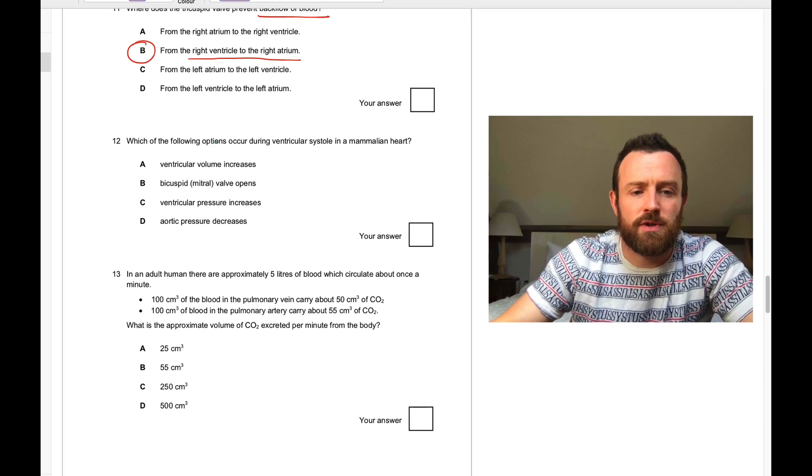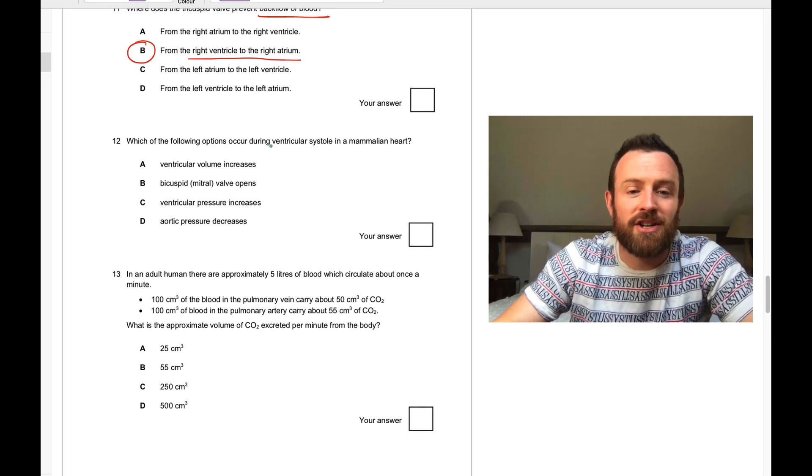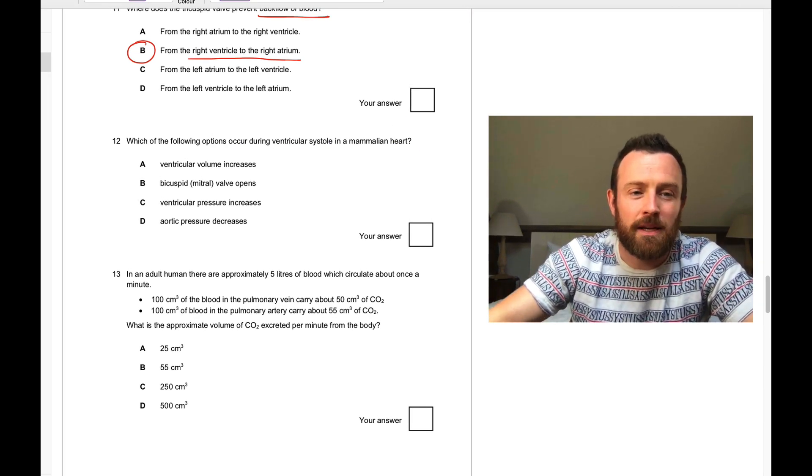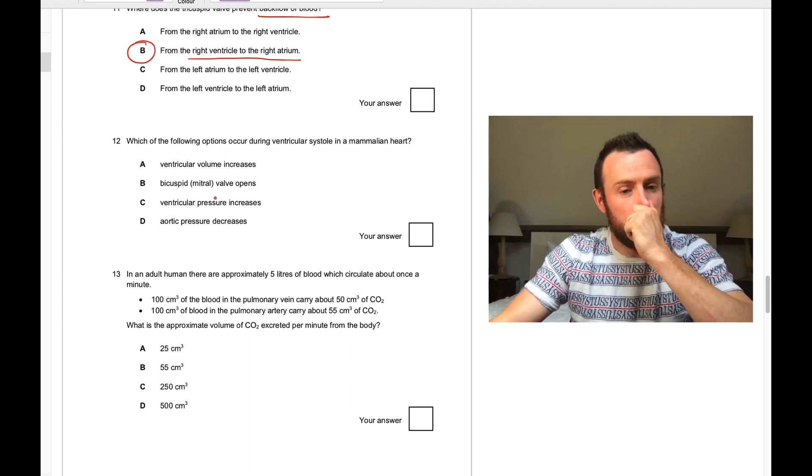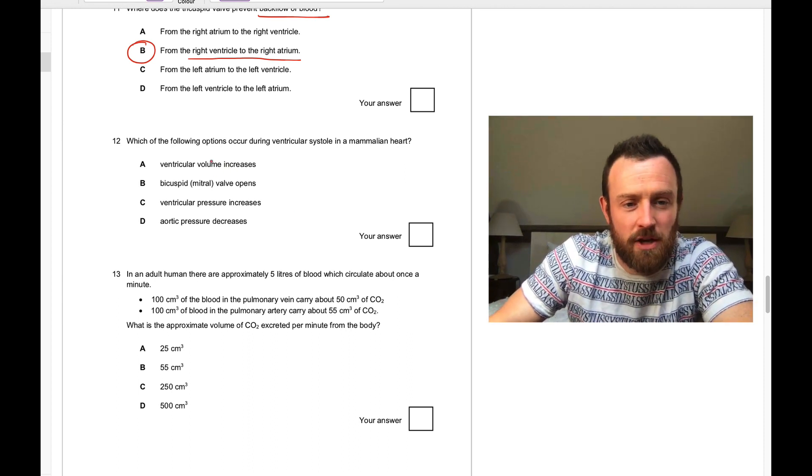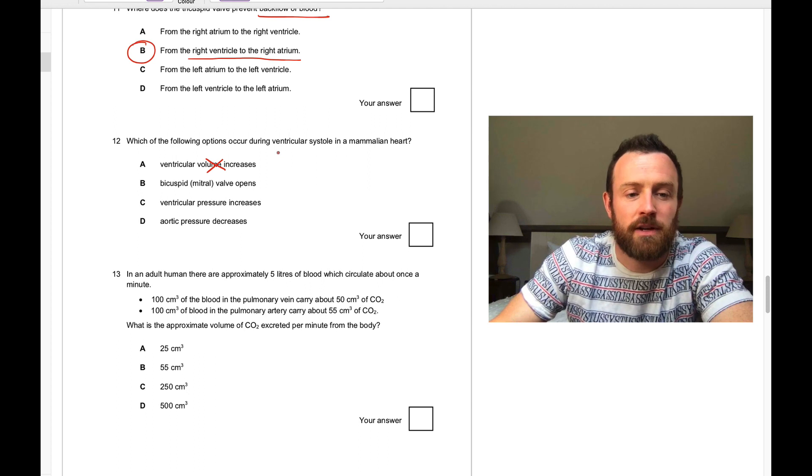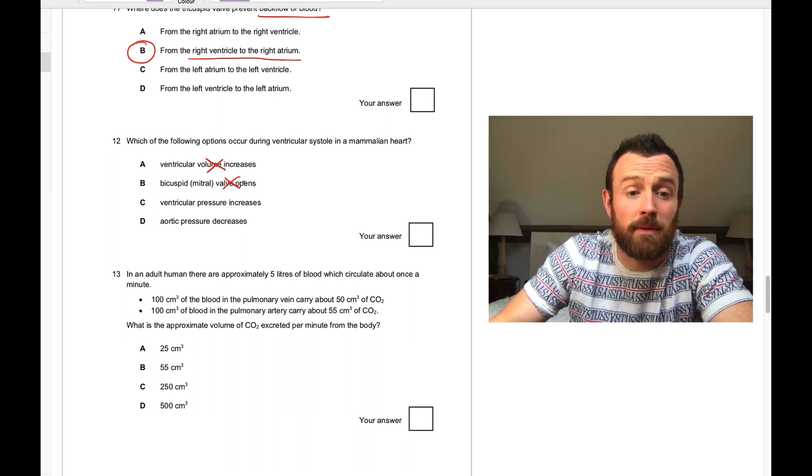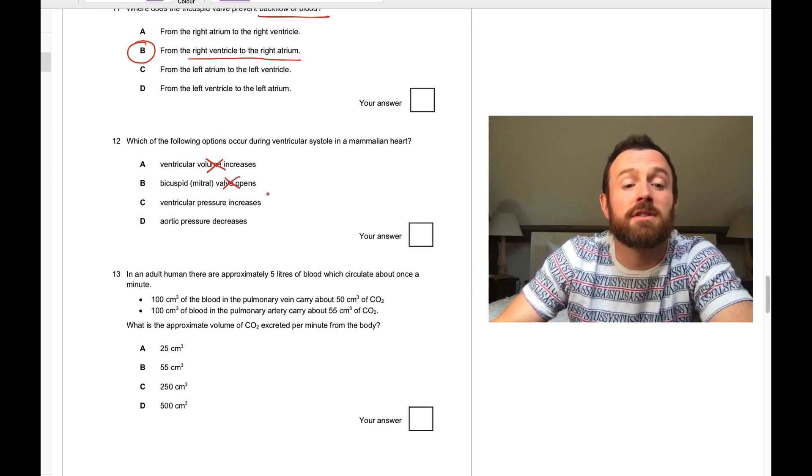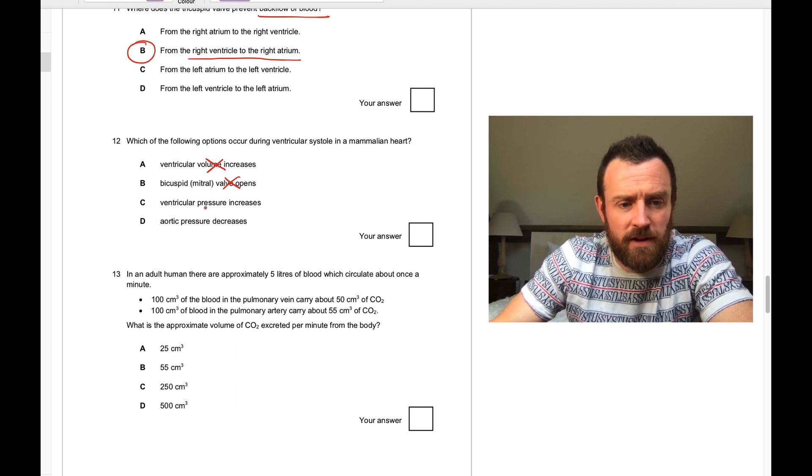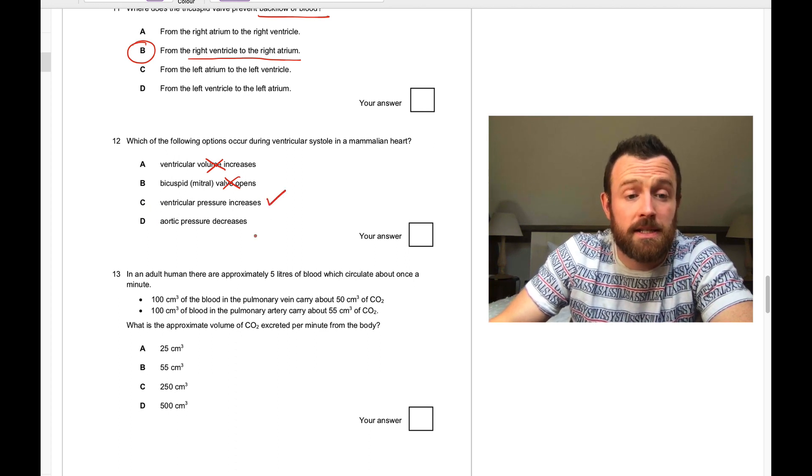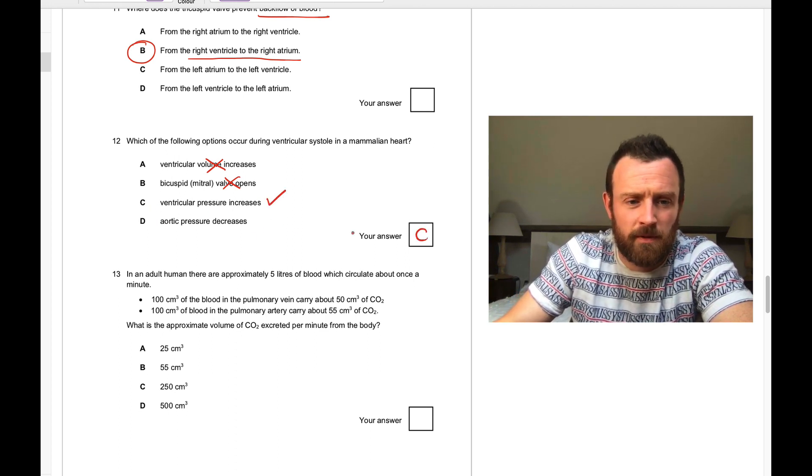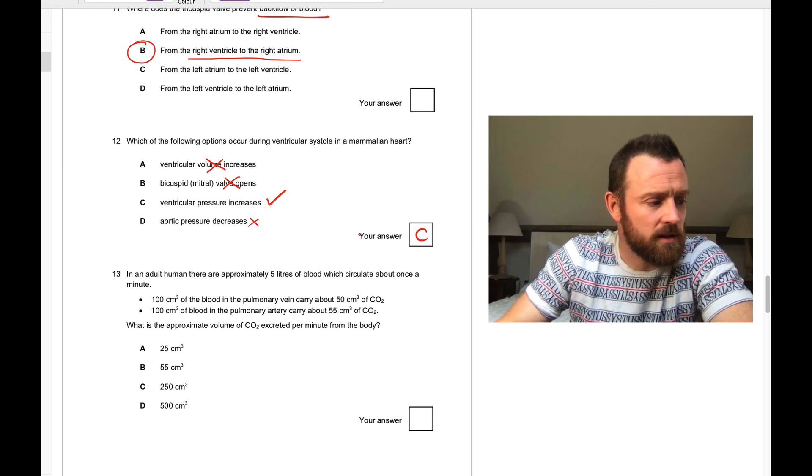Question twelve. Which one of the following options occur during ventricular systole in the mammalian heart? Does volume increase? No, because we're pushing blood out of the ventricle. Does the bicuspid valve open? No, it's going to be firmly shut because otherwise the blood would go out to the atria. Does ventricular pressure increase? Yes, it does. Aortic pressure? No, that doesn't decrease either.